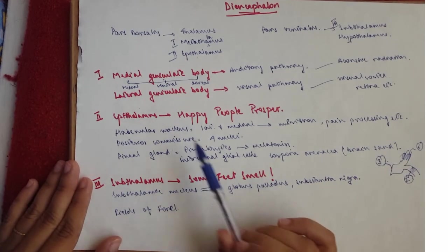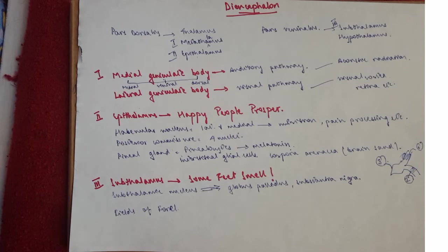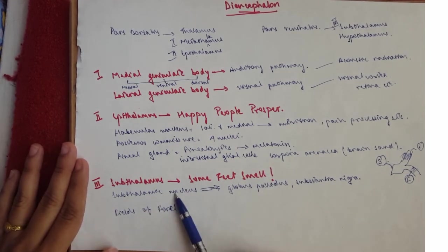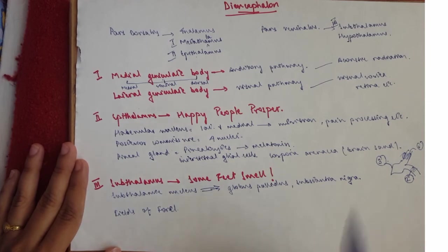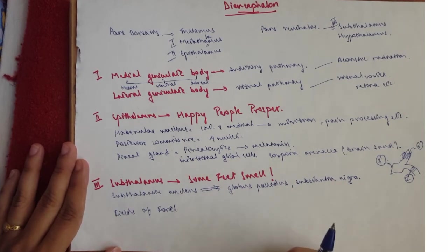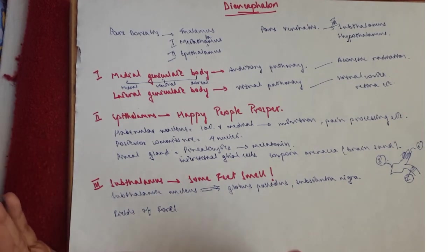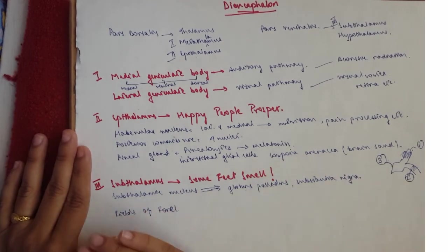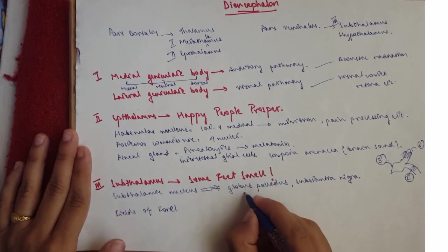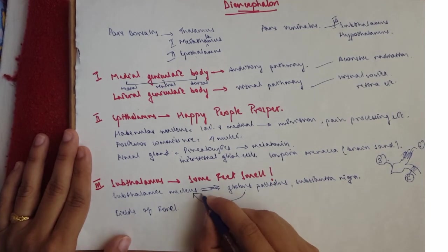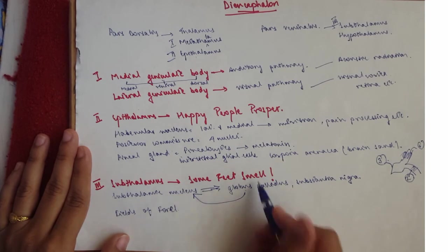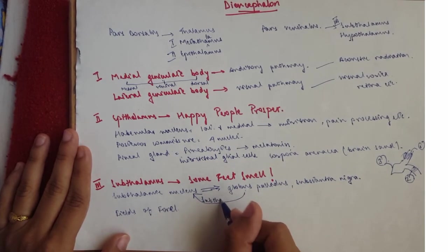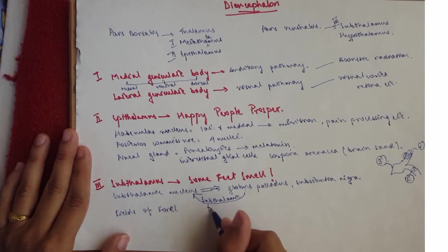So the subthalamic nucleus receives input from the globus pallidus, and then when it receives input from the globus pallidus, it does so through Smell, which is the subthalamic fasciculus.